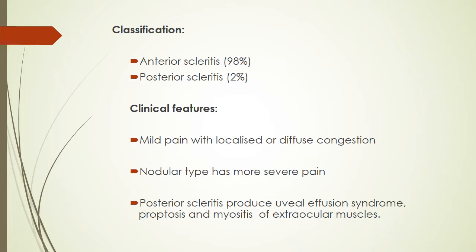Scleritis may be associated with keratitis and iridocyclitis. In the type without inflammation, extreme thinning of the sclera may occur and the underlying uvea may bulge through it. This variety, also called scleromalacia perforans, is painless.